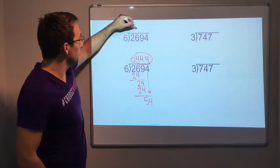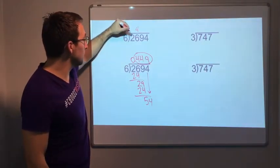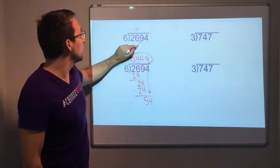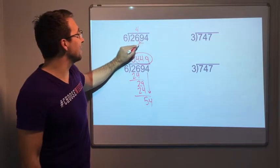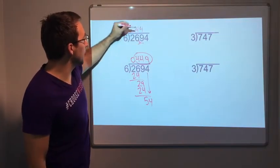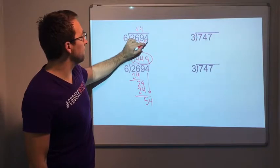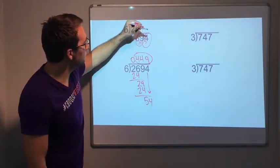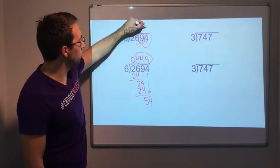Let's watch this. 6 goes into 26 four times, remainder of 2. 6 goes into 29, it goes in 4 times, remainder of 5. And then 54. You see how this works together? 29 and then 54. 6 goes into 54 nine times.